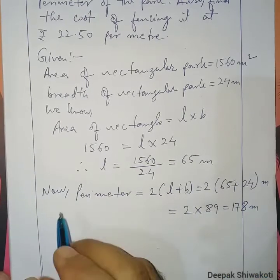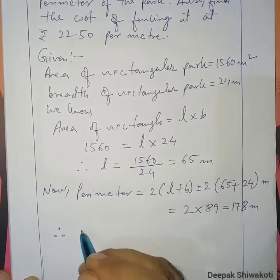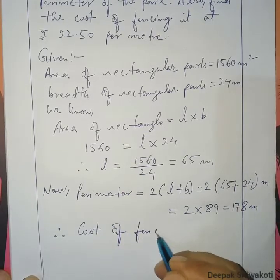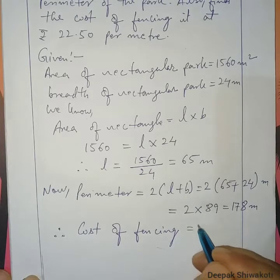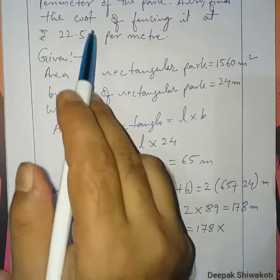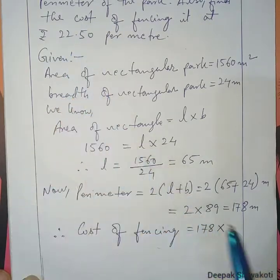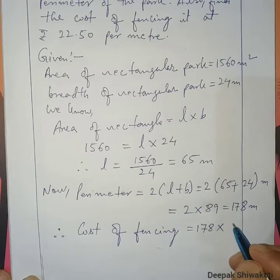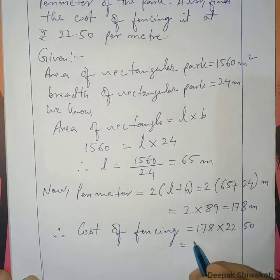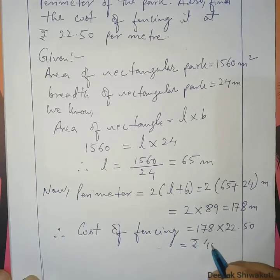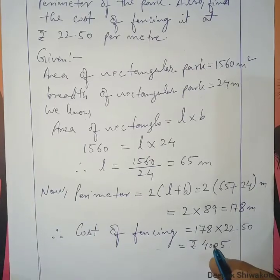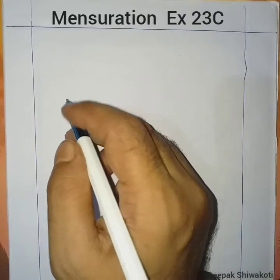Cost of fencing = perimeter × rate per meter = 178 × ₹22.50 = ₹4,005.